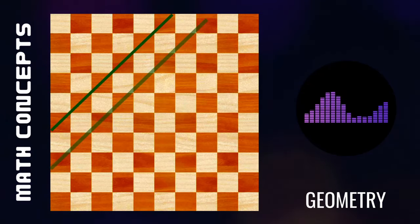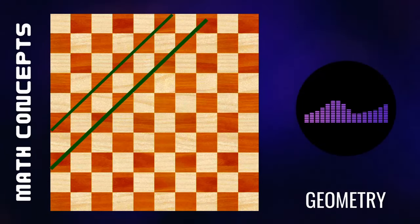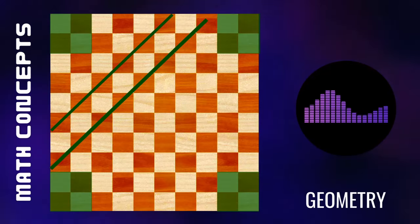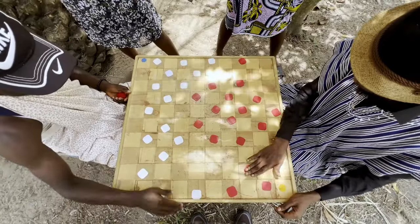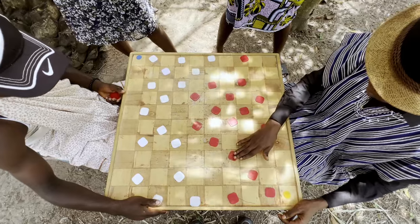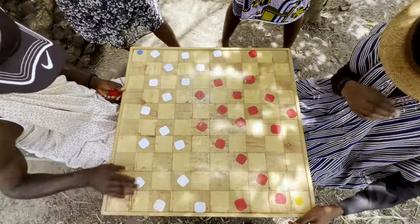The movements of the pieces in draft follow diagonal lines on the board, which can be described using geometric concepts such as angles, lines and triangles. Understanding these concepts can help you make better moves and plan your strategies more effectively.